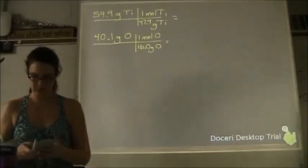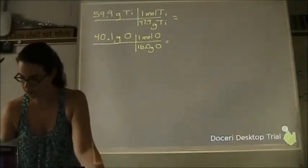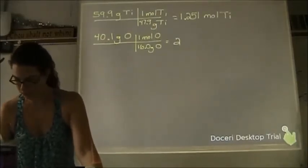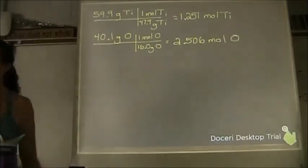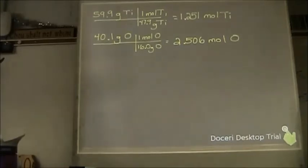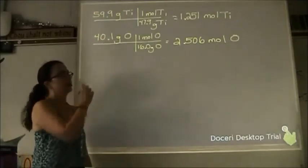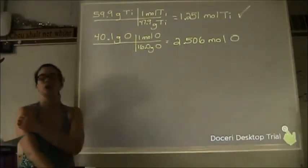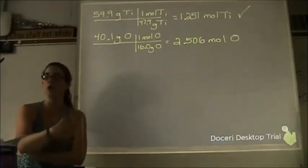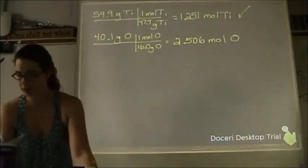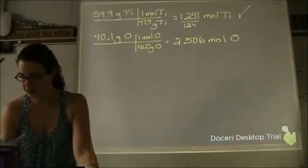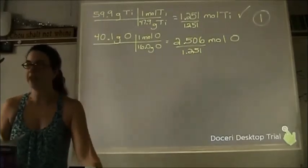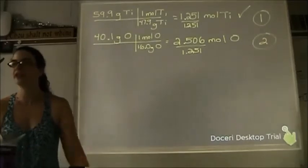Put it in the calculator and get the mole values. Step three: look at your number of moles and decide which is smaller. The objective is to get to whole number ratios, so divide both of your mole values by that smaller number. You get one for one and approximately two for the other.